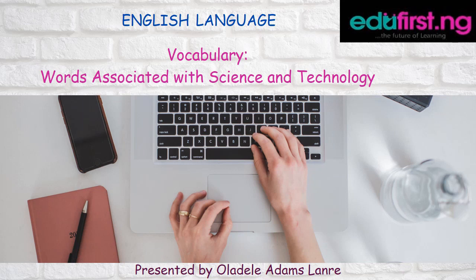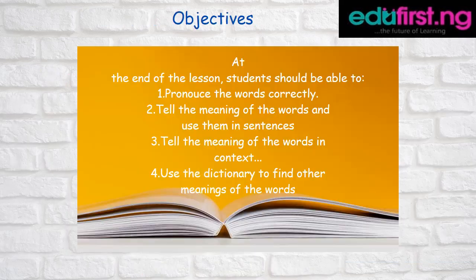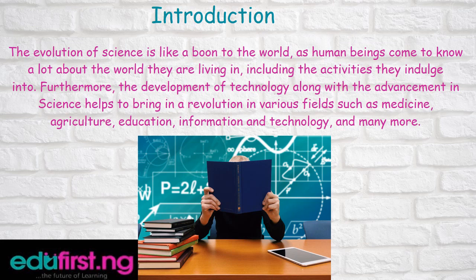Hi everyone, welcome to today's English language class. In today's class we'll be looking at a topic called words associated with science and technology. I am Oladile Adams Larry. The objectives of today's class: at the end of the lesson, students should be able to: one, pronounce the words correctly; two, tell the meaning of the words and use them in sentences; three, tell the meaning of the words in context; four, use the dictionary to find other meanings to the words.